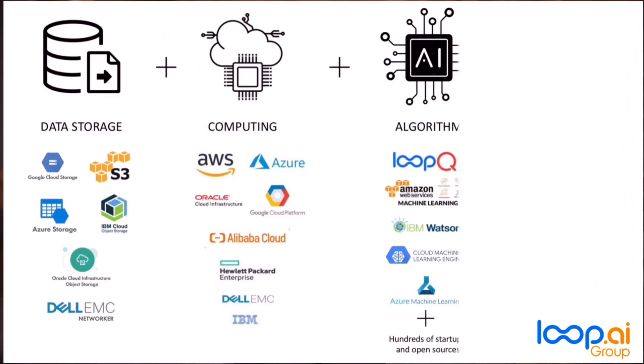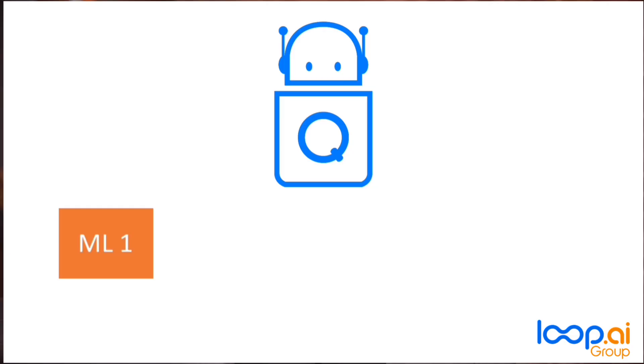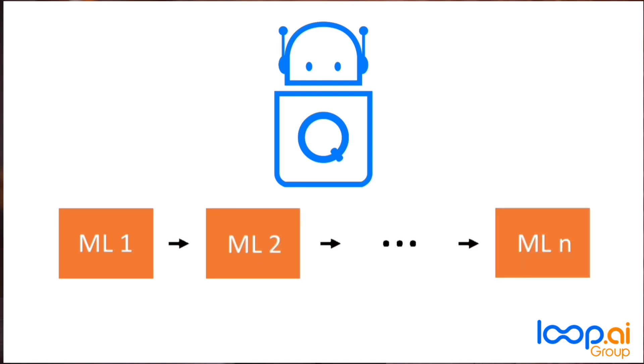Three: machine learning and LLM algorithms — empowering the use of any commercial, open-source, or custom-built algorithms and large language models in each block of your AI agent.